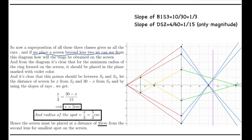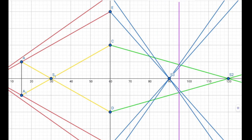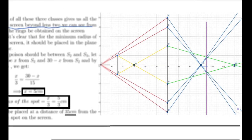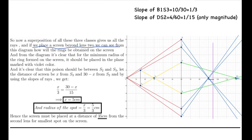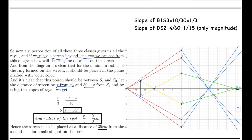Now we need to find this point. Since the minimum position is between S3 and S2, I assume the distance of the screen to be x from S3, so it is (30 − x) from S2. Using the slopes of the extreme rays and equating them at this intersection point, we get x/3 = (30 − x)/15, which gives x = 5 cm. So from lens 2 the screen distance is 30 + x = 35 cm. Hence the screen must be placed 35 cm from the second lens for the smallest spot, and the radius of the spot is x/3 = 5/3 cm.